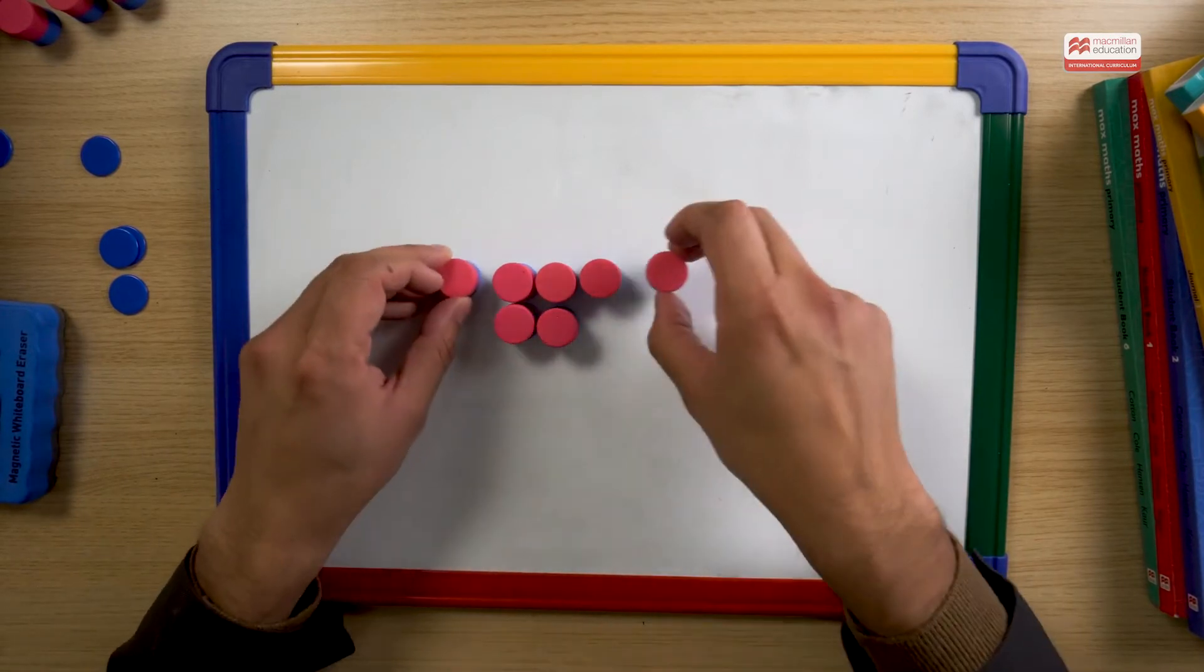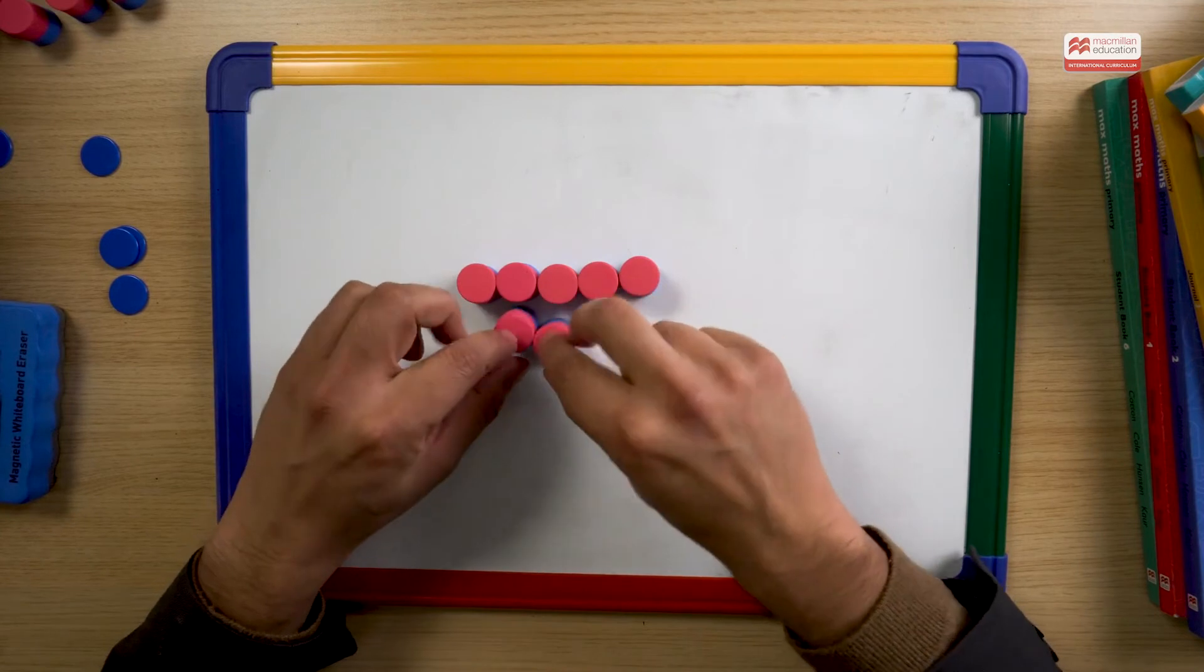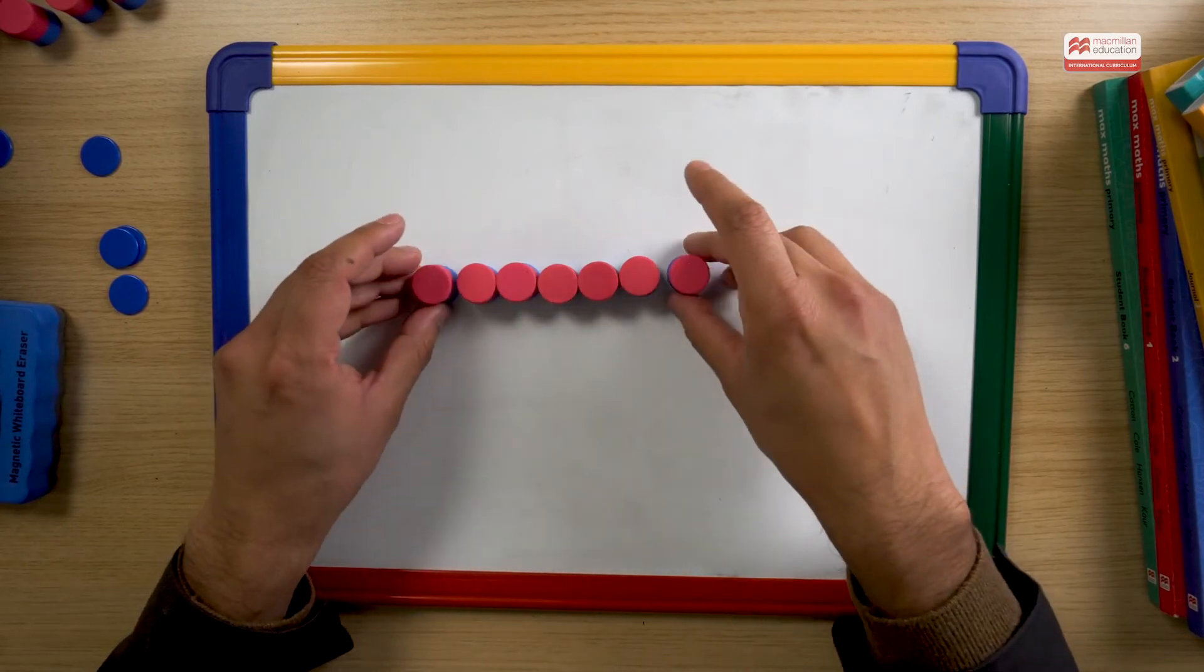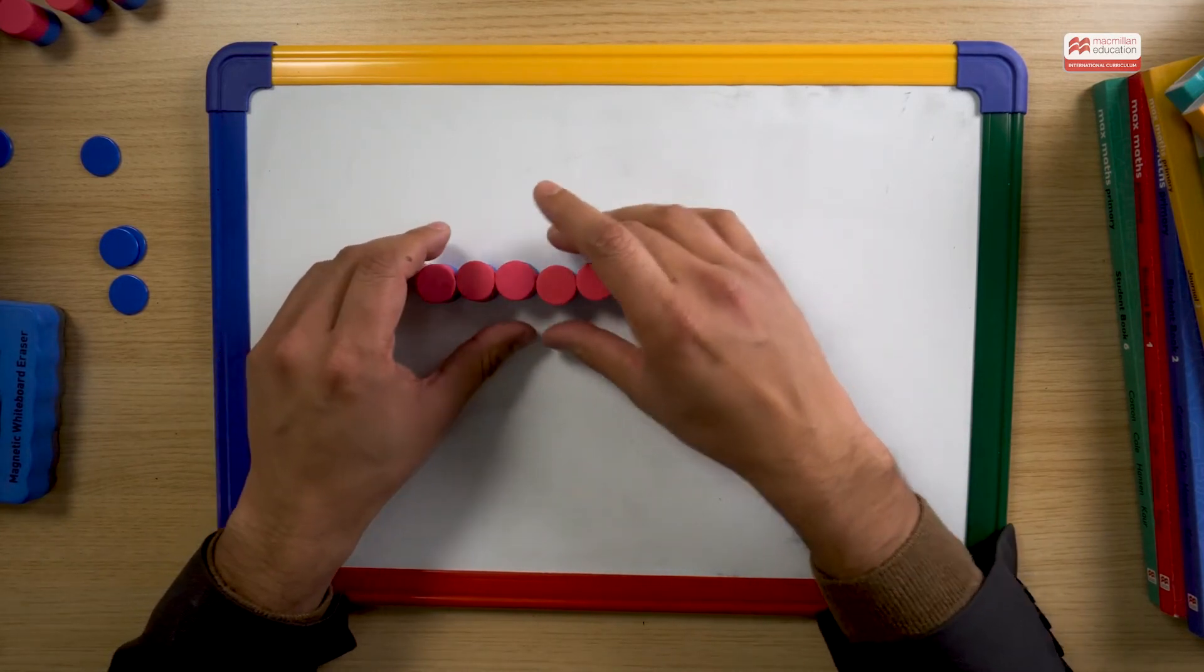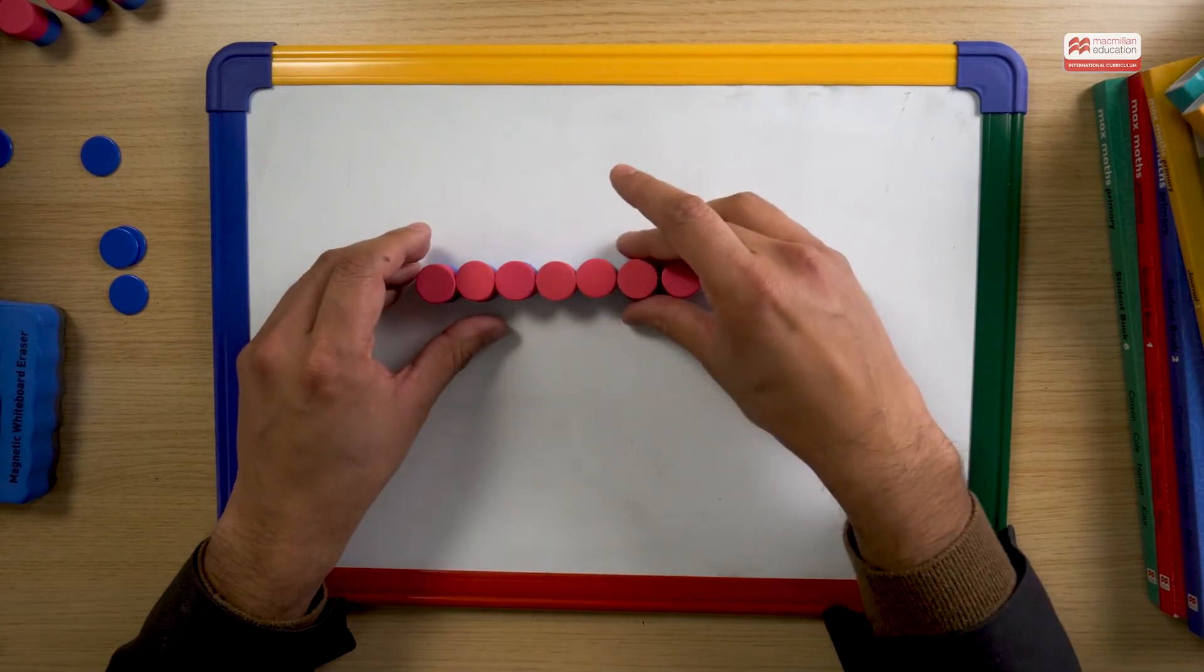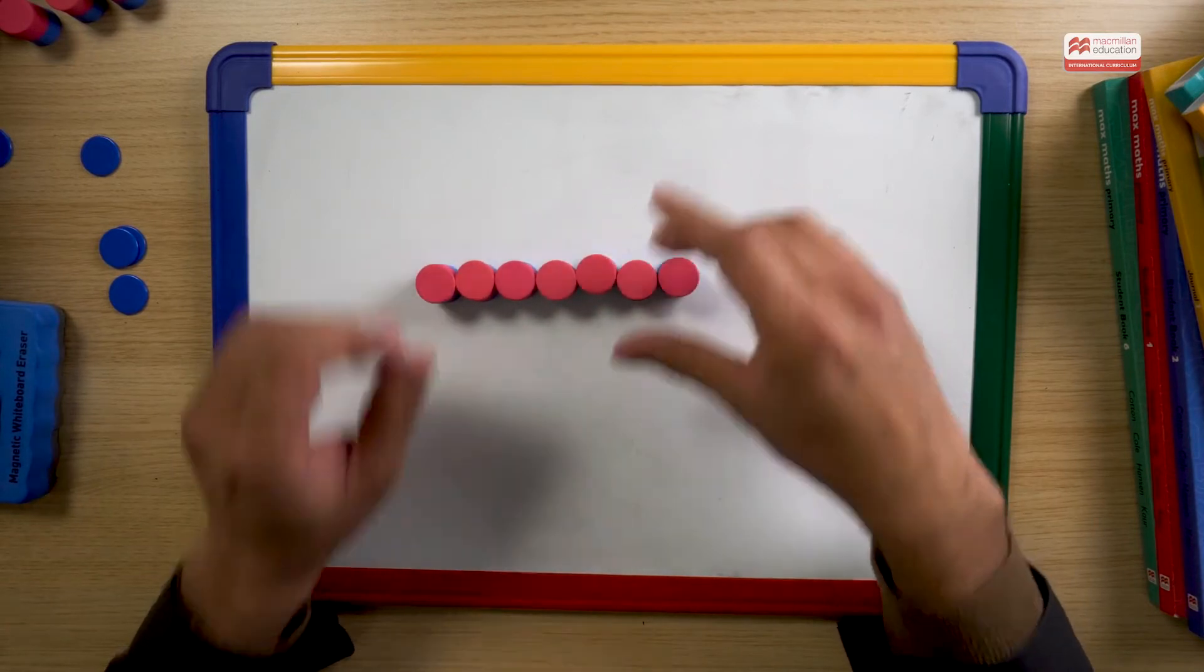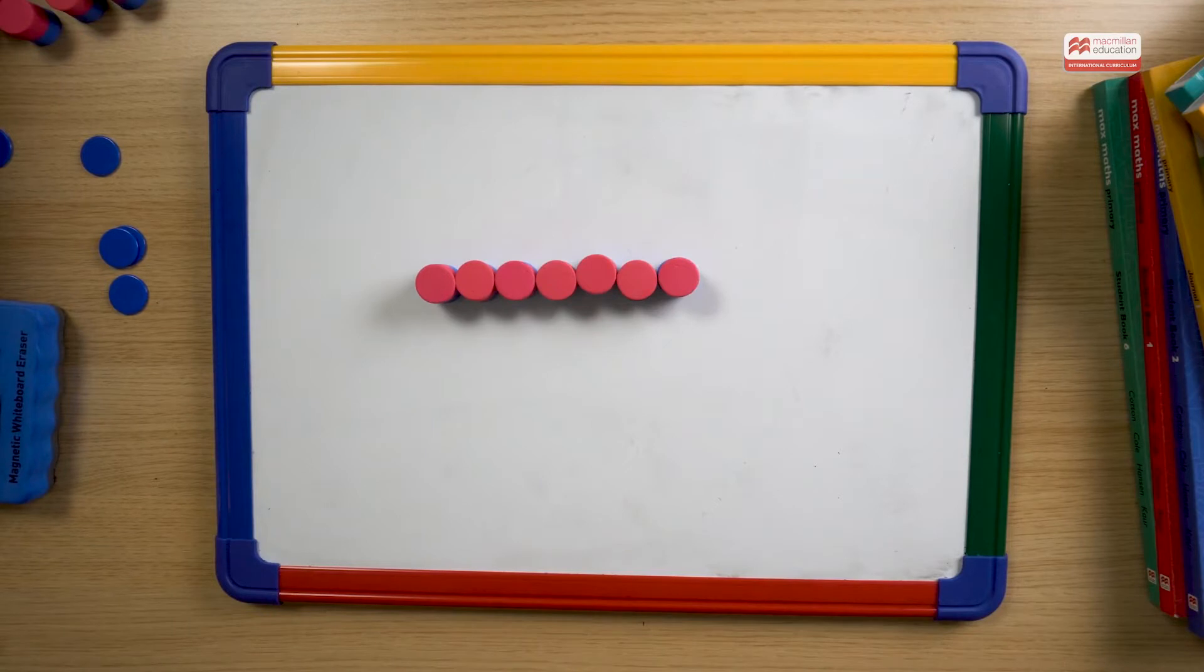So they might say, oh, we can't do this. It's impossible. Give them a bit more time, allow them to play a bit longer. They will have something like this, a rectangle, which is a seven by one rectangle. And so are there any other ways of making a rectangle with seven counters? No, this is the only way. Some children may do this, which is the same rectangle, but rotated.